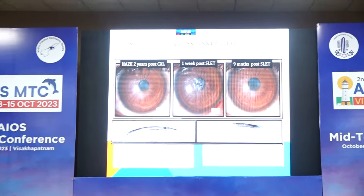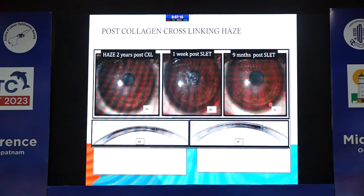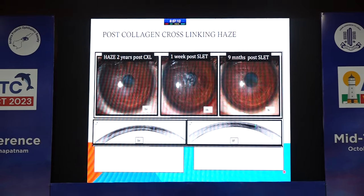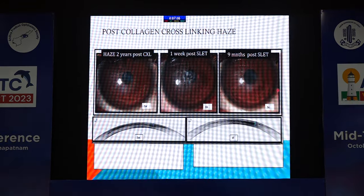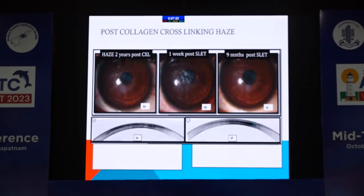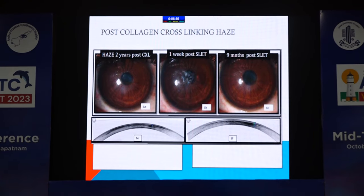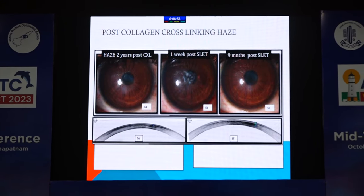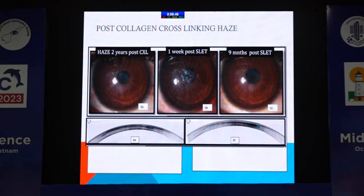He presented with right eye persistent haziness in vision since the procedure. We could not contact the surgeon, but the institute was known to follow a strict protocol for all cross-linking cases. On examination, his visual acuity was 6/36 in the right eye improving to 6/6 with correction. He was reluctant for a contact lens trial as he had undergone the extra procedure to avoid glasses or contact lenses.